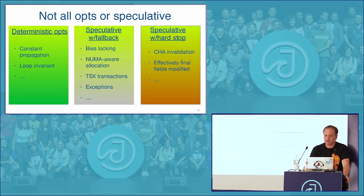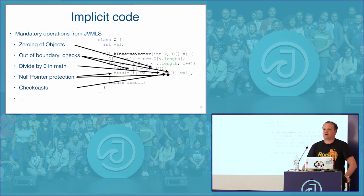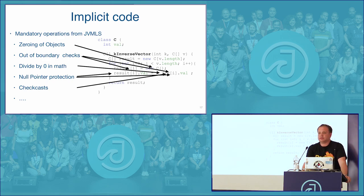One interesting difference between C and Java is that when people write vector-processing code that looks pretty much the same in both languages, they expect the same throughput from C and Java compilers. The difference is that in C++ there's no verification — if you divide by zero, it crashes. In Java, if division by zero happens, an arithmetic exception is thrown and the code can handle it and keep going. Java mandates various implicit checks: zeroing of objects when arrays are created, out-of-bounds checking, divide-by-zero checking, and null pointer checking.